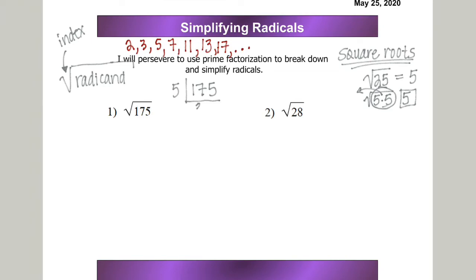So 5 goes into 17 three times with 2 left over. 5 times 3 is 15, 17 minus 15 has that remainder of 2, so I put that little 2 right here. Now, 5 goes into 25 five times. So then I put a little box around 35 because it is not prime, and I continue with 5 until I can't use 5 anymore. Does 5 go into 35? Indeed it does. 5 goes into 35 seven times.